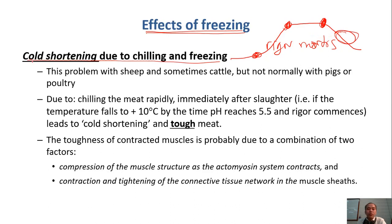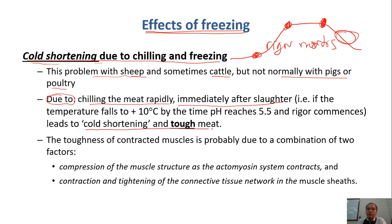Cold shortening normally occurs with sheep and sometimes with cattle, but not normally with pigs or poultry. The reason is that we chill the meat too rapidly. Remember the recommended time — we should chill within two hours, but we should not chill too fast. If we chill very fast immediately after slaughter, the result is cold shortening, and the meat becomes tough instead of tender and also becomes darker.